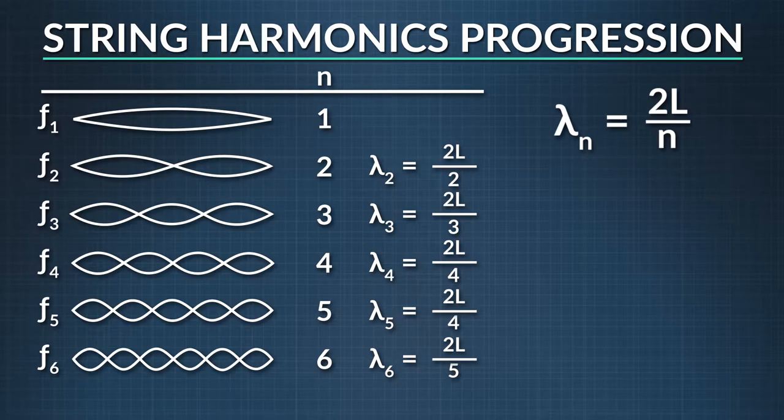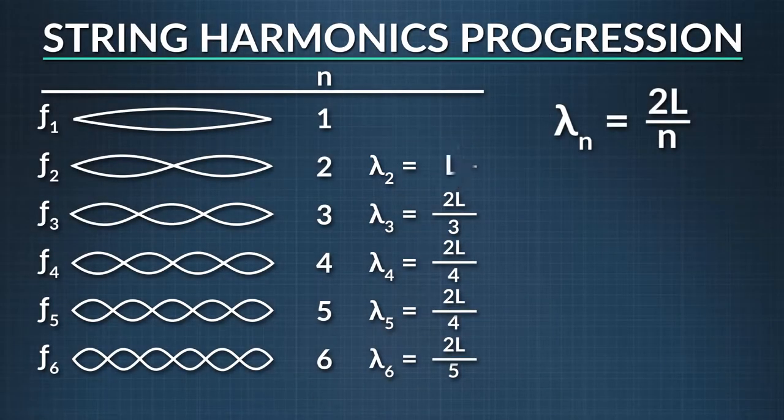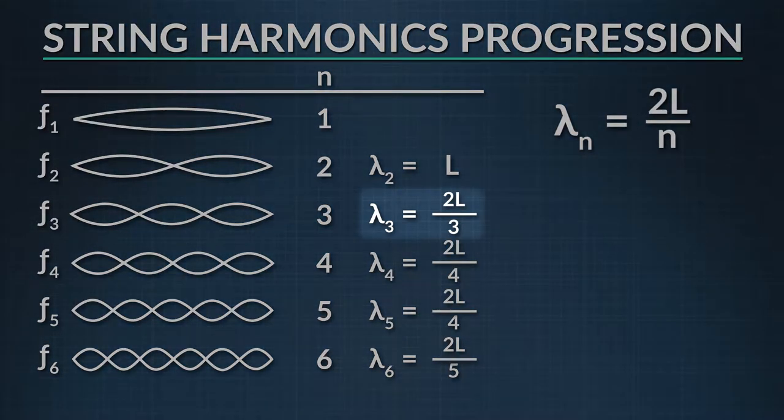So the second harmonic's wavelength is equal to two times the length of the string divided by two, which is just equal to the length of the string. The third harmonic's wavelength is equal to two-thirds times the length of the string.